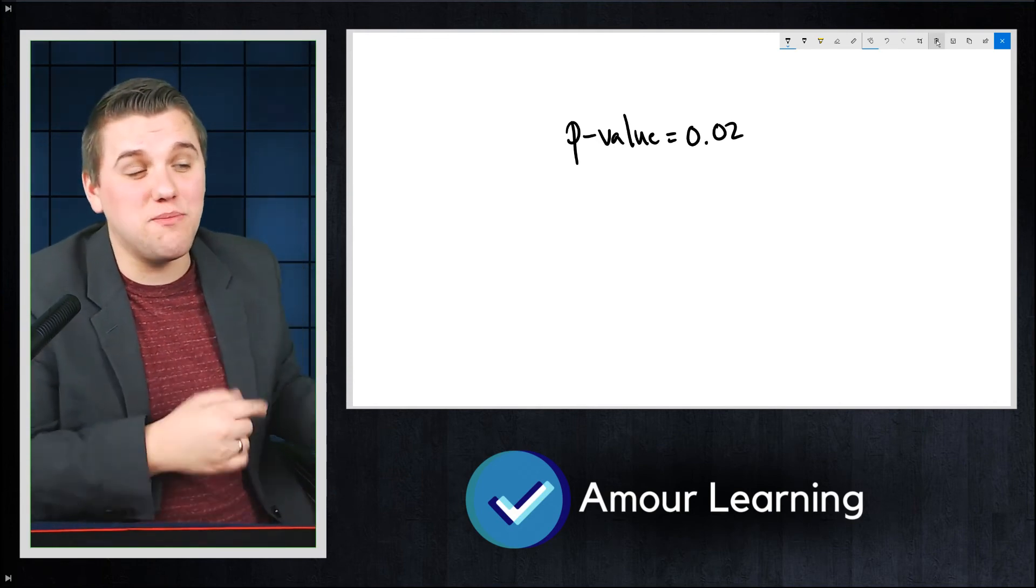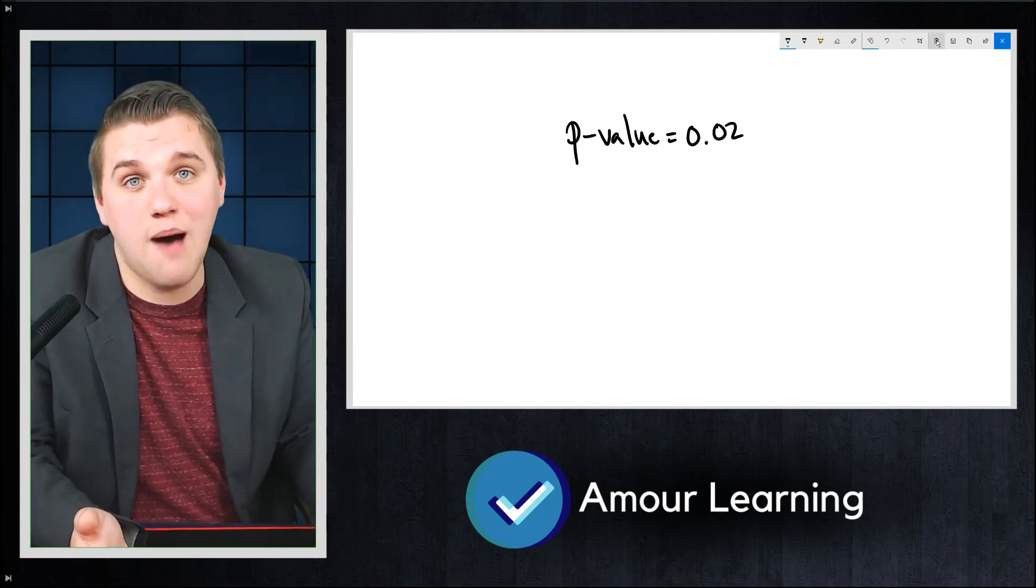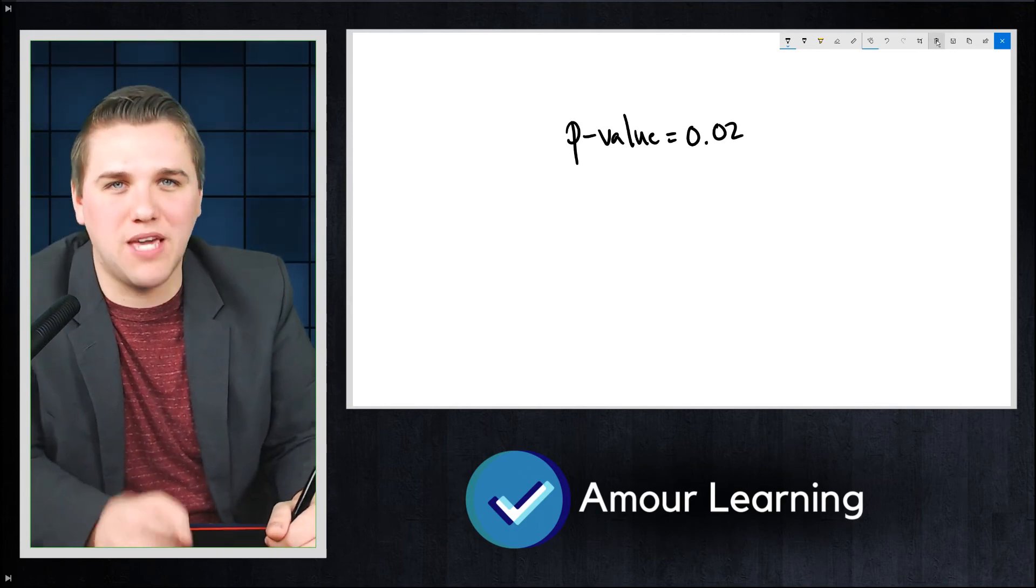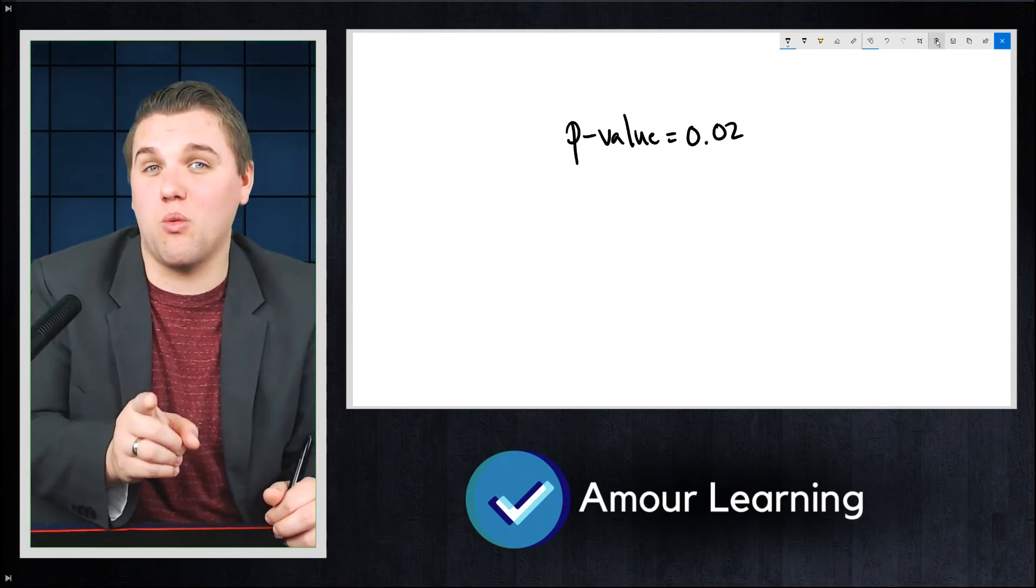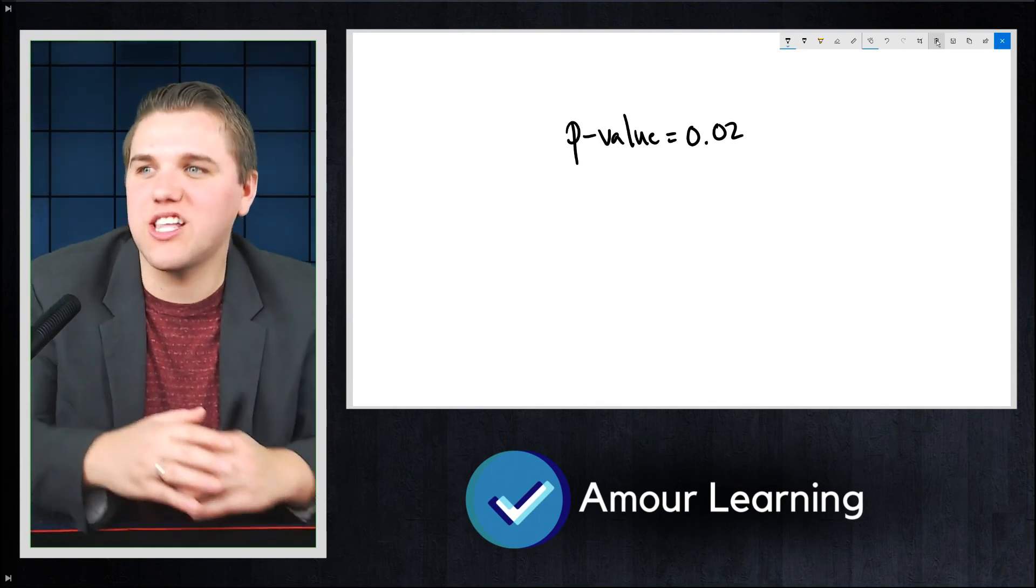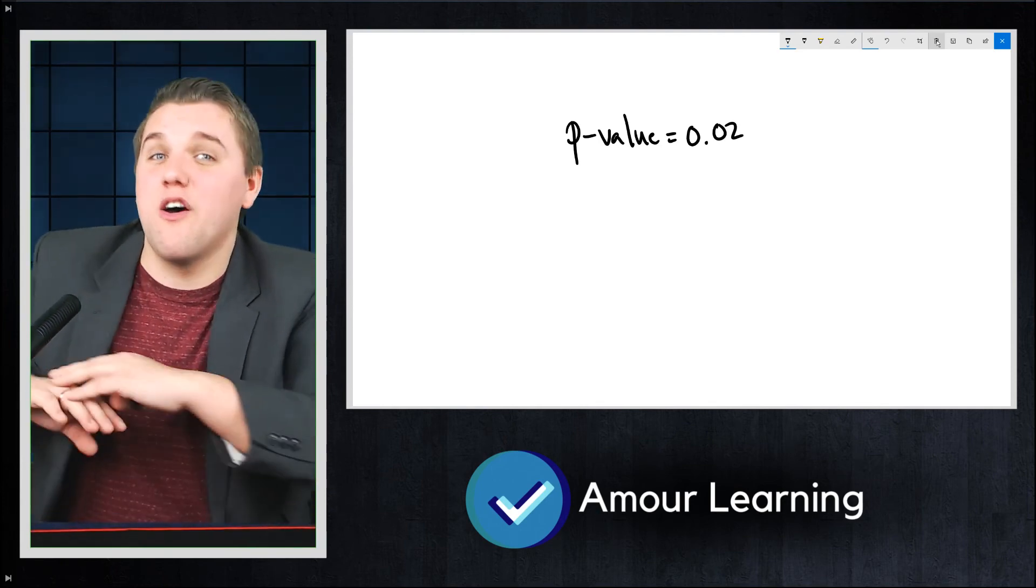Meaning that it could be that your experiment is just an anomaly. But there comes a point in time when the p-value is just so small that it's not that your experiment was an anomaly, it's just that the null hypothesis was false from the get-go.